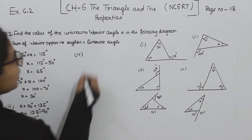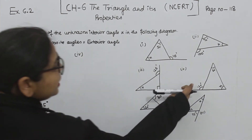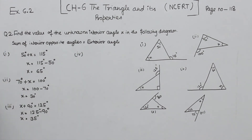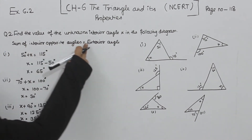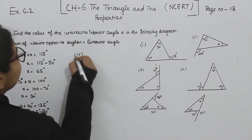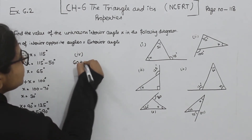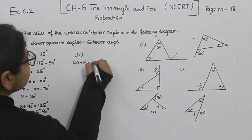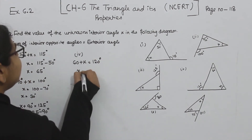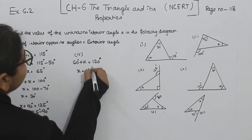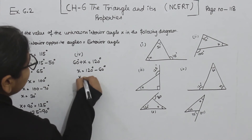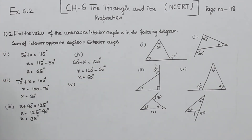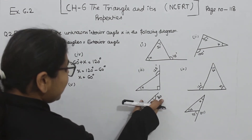Now comes part 4. In part 4, the exterior angle is 120 degrees, and the interior opposite angles are 60 degrees and x. The sum of interior opposite angles equals the exterior angle: 60 plus x equals 120 degrees, so x equals 120 minus 60, giving x equal to 60 degrees.